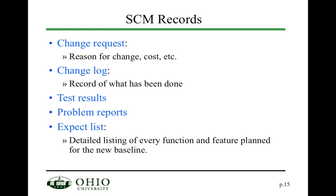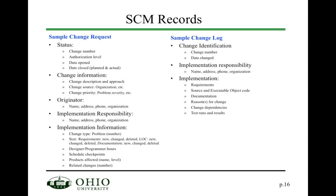Some basic configuration management records include a change request if you want to have a change, and a change log to record what has been changed after the change has been done. Also test results — the outcomes of the tests — problem reports describing identified problems and their resolutions, and an exception list. The next two slides provide a basic layout of some of these documents.